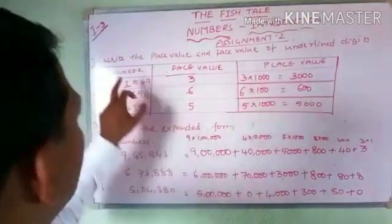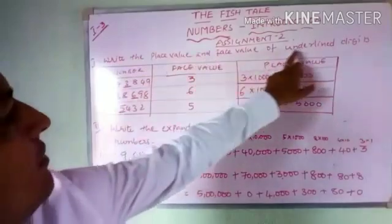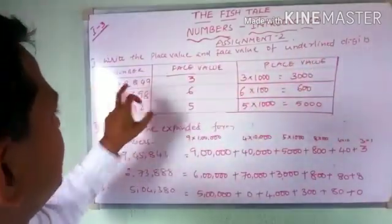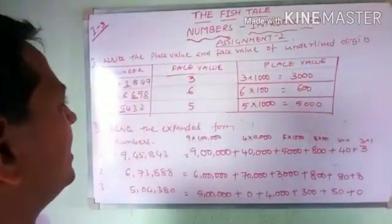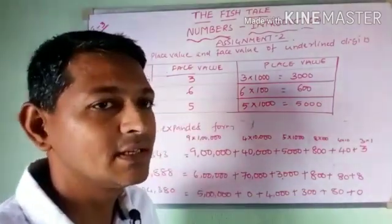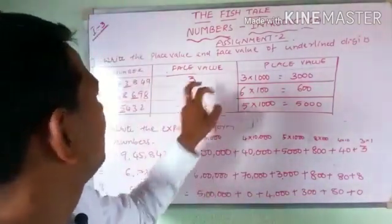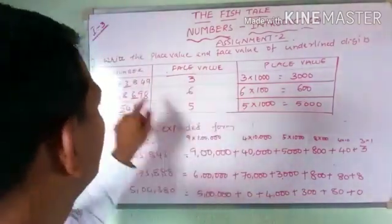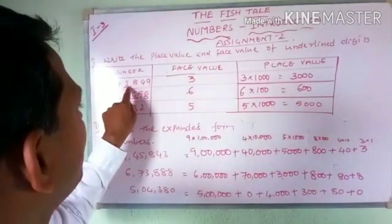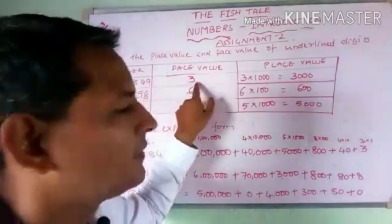The first question asks us to write the place value and face value of the underlined digits. The underlined digit here is 3. As told in the previous lecture, the face value is the original value of the number, so the face value of 3 is 3 itself.